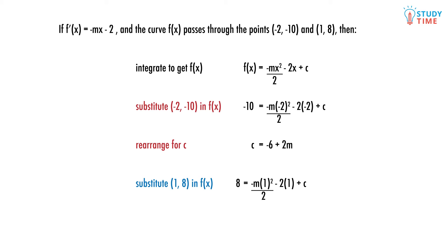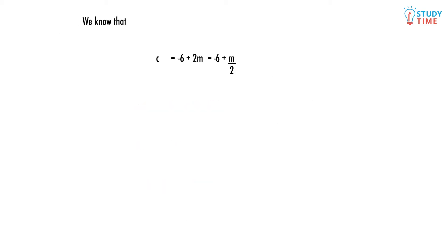We just do the same thing again, substituting f(x) equals 8 and x equals 1. Combining the two equations now like a simultaneous equation, we then rearrange for M and we see that M equals 8. We put this value for M back into one of our equations and then solve for C.